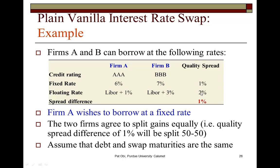The quality spread difference is 2%. Firm A would pay only LIBOR plus 1%, while B pays LIBOR plus 3%. LIBOR is the short-term interest rate payable on a euro-dollar loan — it stands for London Interbank Offered Rates.